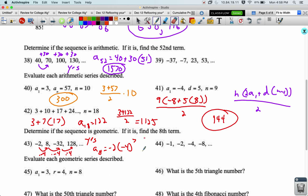Negative 4 to the power of 7 is negative 16,384 times the negative 2 gets me 32,768.